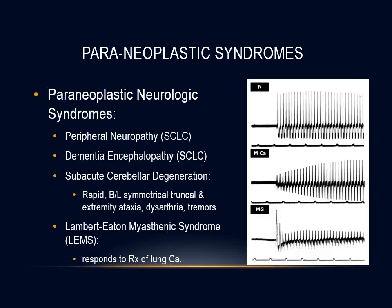Lung cancer is the most common cancer associated with paraneoplastic neurological symptoms, typically associated with small cell carcinoma. These are thought to be immune-mediated, with many autoantibodies identified. Manifestations include peripheral neuropathy, dementia, encephalopathy, subacute cerebellar degeneration, and Lambert-Eaton myasthenic syndrome. Paraneoplastic cerebellar degeneration is very uncommon but is most commonly associated with small cell lung carcinoma.